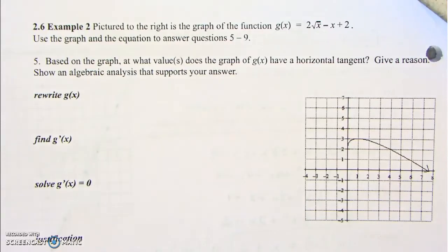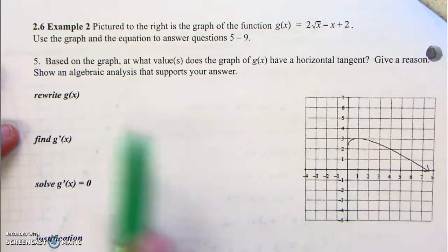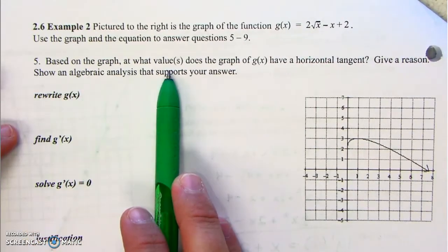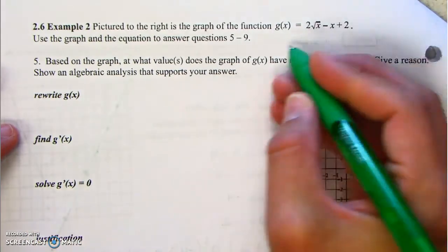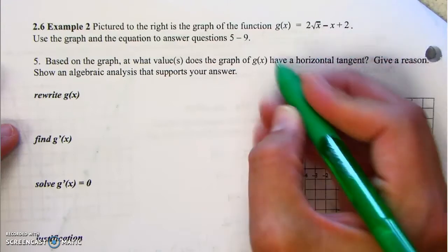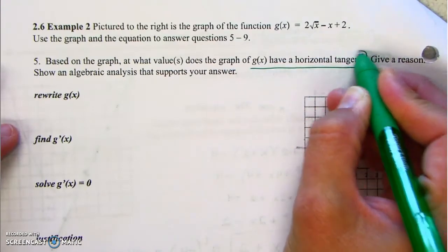We're going to try and get two examples done. Here's this function. Based on this graph, at what values of x will g have a horizontal tangent?